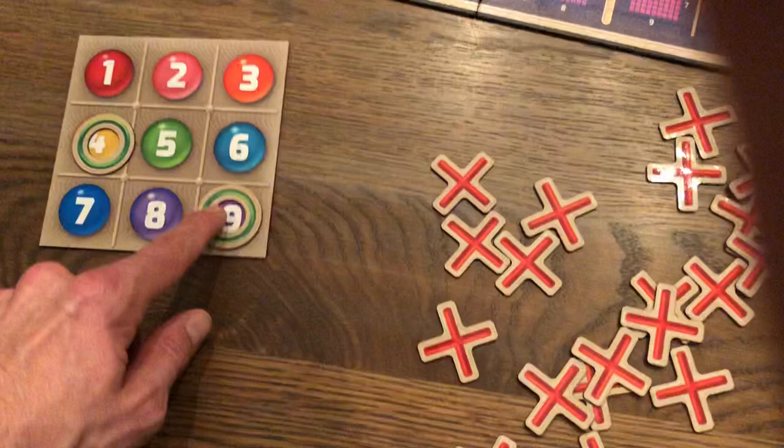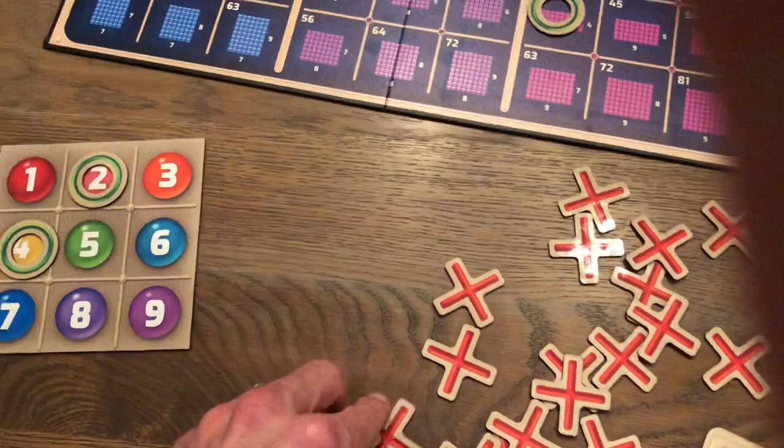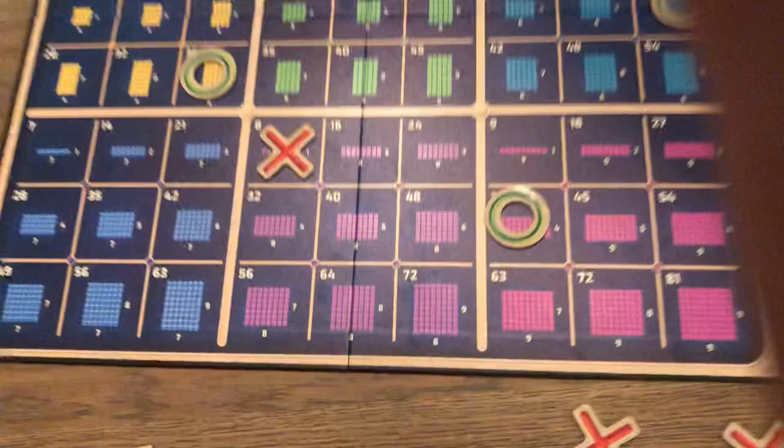All right, so now it's X's turn. X is going to move this to two, so they claim all the eights on the board. Four times two, two times four. There's an eight here, there's an eight there. And of course, one times eight. And then going down here, eight times one.